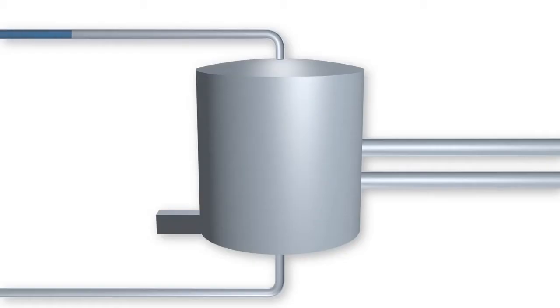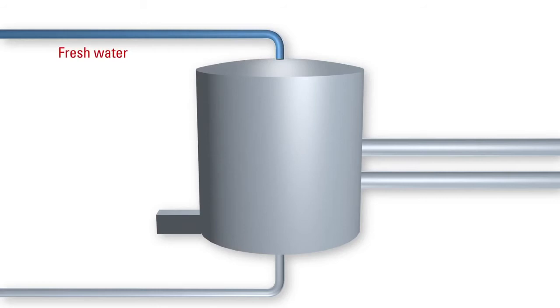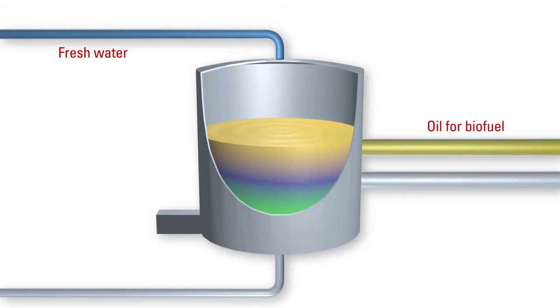We grow it up and then introduce fresh water to lyse and open the cells. From that point we have the oil fraction that we will extract and use for fuel production, and the protein fraction, the enzyme fraction, that we will isolate and sell for profit.